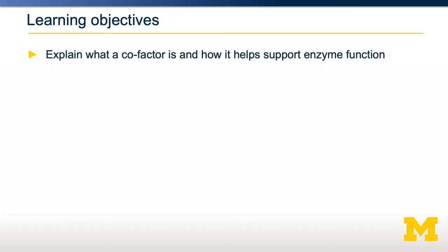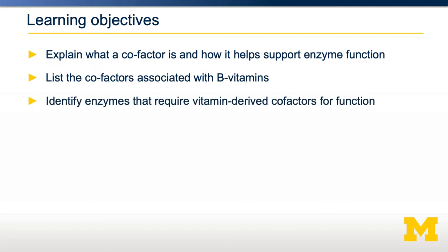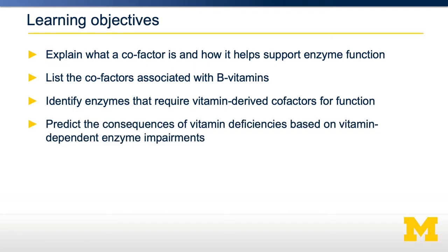In this class, we've talked about a variety of different vitamins. One large category of water-soluble vitamins are B vitamins, and a subset of these are important for supporting metabolism. In this video, we're going to describe what a cofactor is and how it supports enzyme function, which cofactors are associated with B vitamin supplementation, what enzymes require B vitamin-dependent cofactors, and what would be the consequences of a vitamin deficiency using our knowledge of metabolic pathways to understand how a deficiency can result in a pathophysiology.